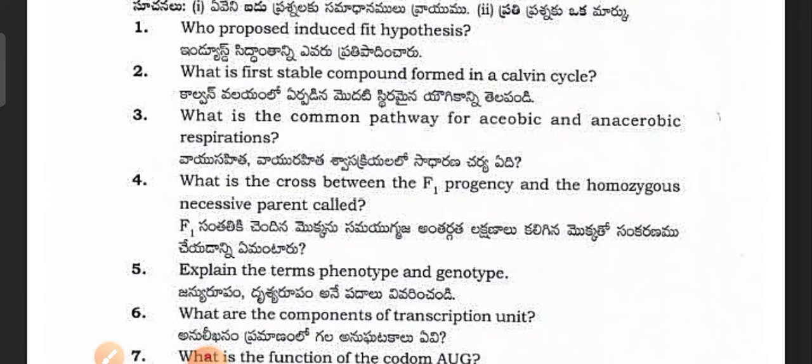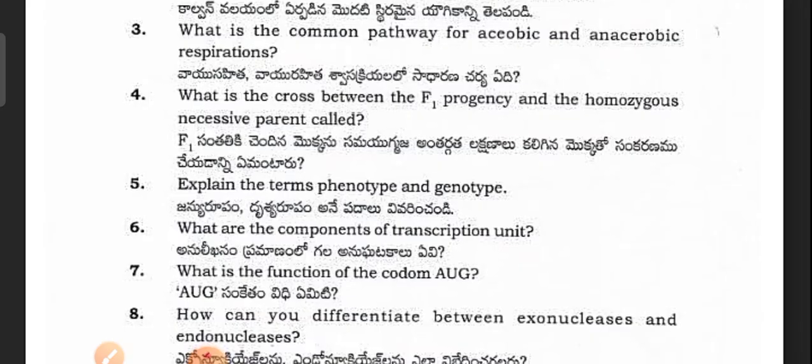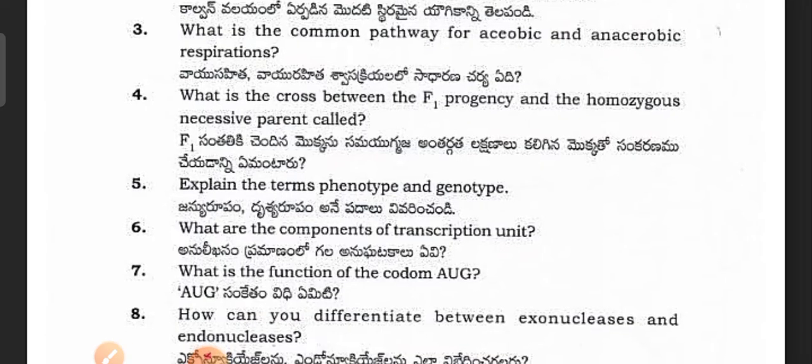What is the first stable compound formed in the Calvin cycle? (Calvin valayam na airupan na boh mudiri siramay na yao ki kaantharapande.) What is the common pathway for aerobic and anaerobic respirations? (Vayu saitha vayureka swasa krevlo saadhan na chera yehdi?)